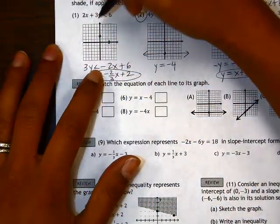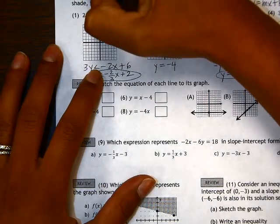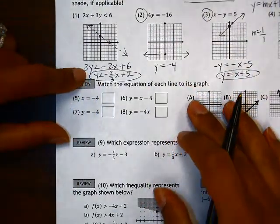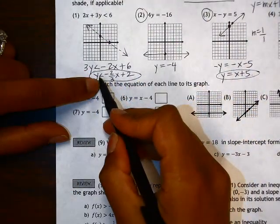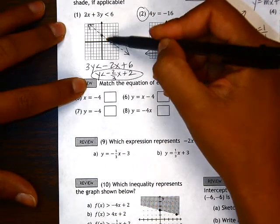We need to look at the inequality symbol. It is a less than, not a less than or equal to. So I'm going to use a dotted line. And we need to remember to shade the entire solution set. It is all values that are less than. That means I'm going to shade below the line.